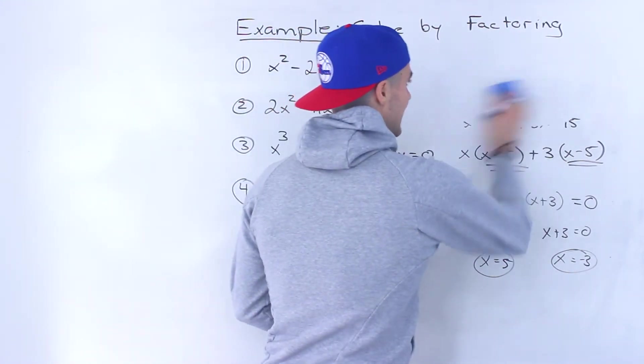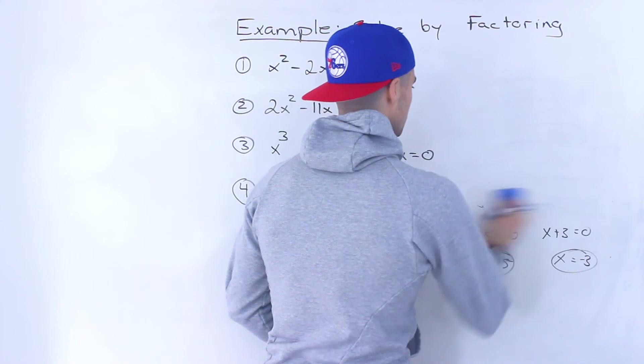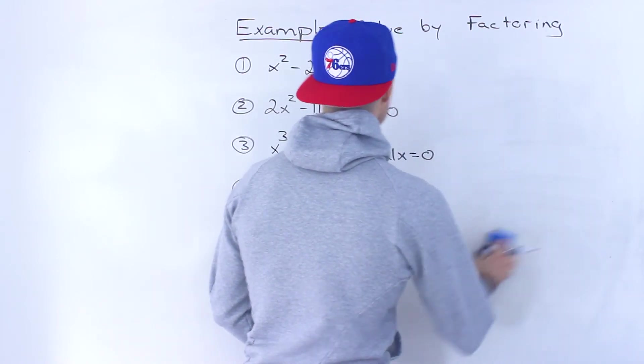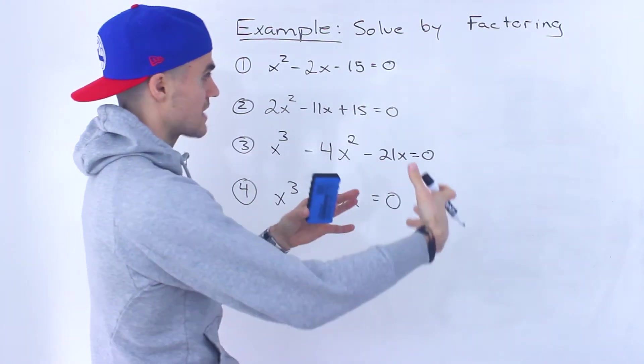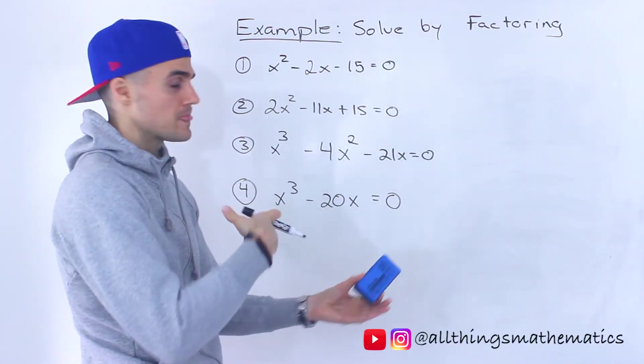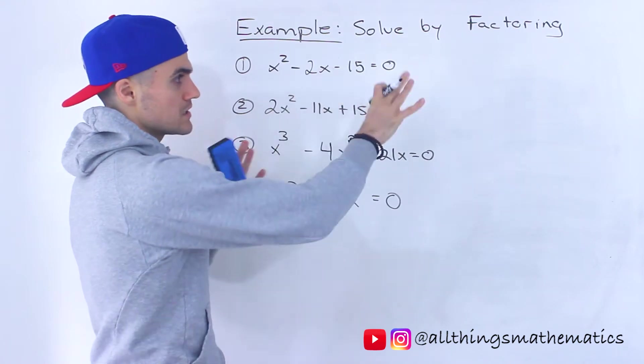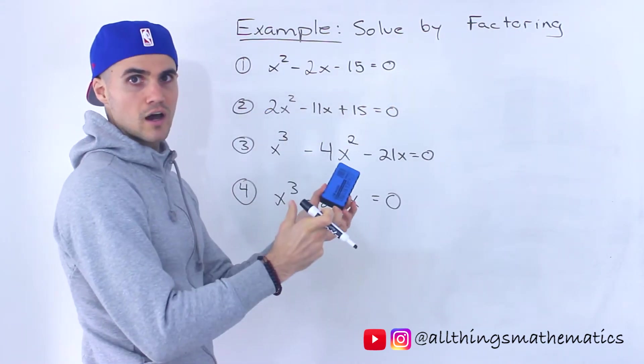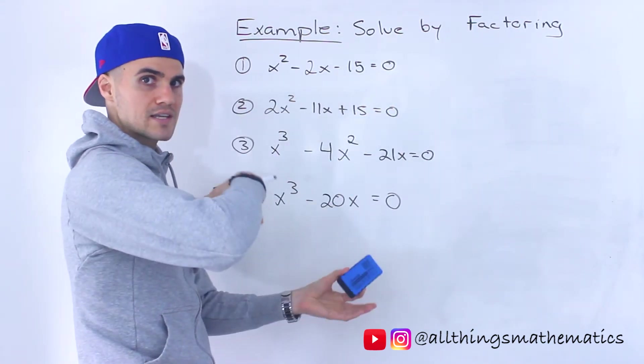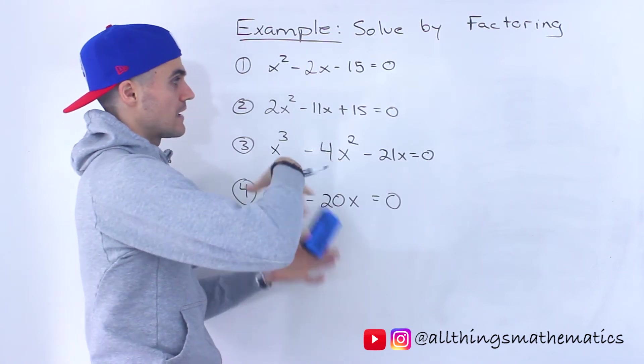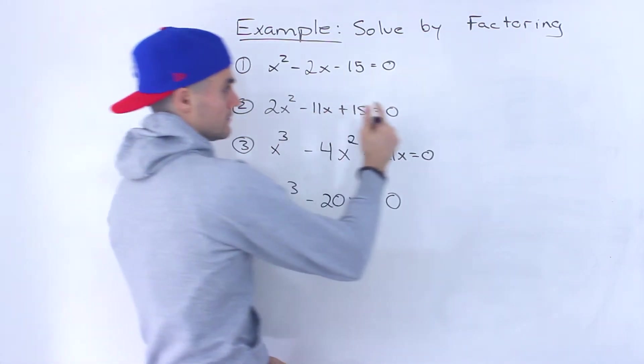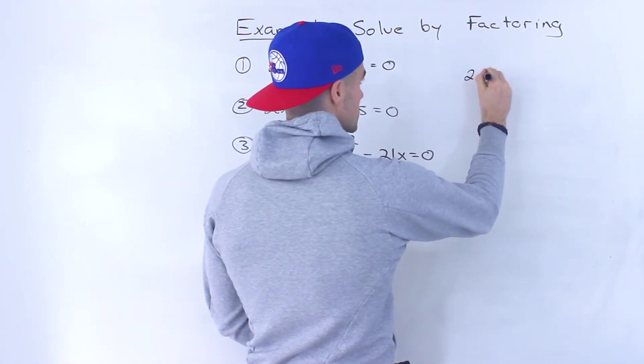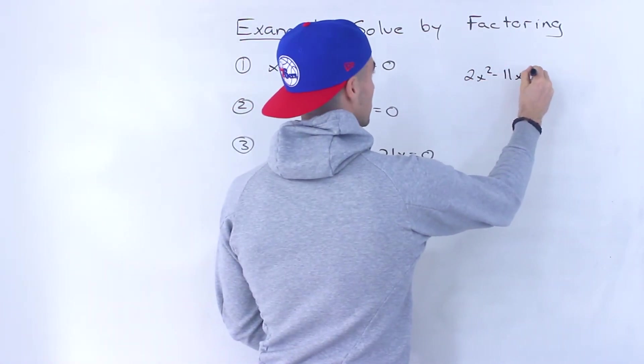Alright, moving on to the next equation. We got 2x² - 11x + 15 = 0. Notice that with all of these, everything is brought to one side already, which is nice. But sometimes there's going to be a mixture of things, so you got to bring everything to one side, simplify all the like terms, and then go about this process.